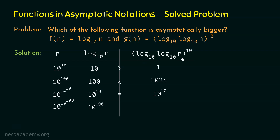So we can replace log log n by 100, and therefore we get 100 to the power 10. Is 100^10 greater than 10^100? No, not at all — 100^10 is much smaller than 10^100. Therefore, at this point, f(n) is bigger than g(n), and after this point, whatever value of n we take, f(n) is always bigger than g(n).